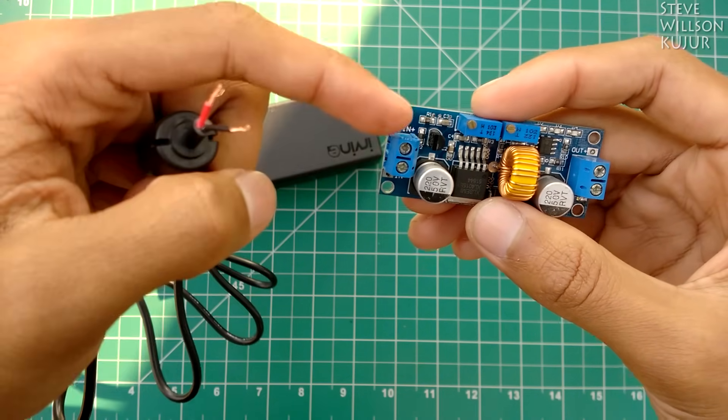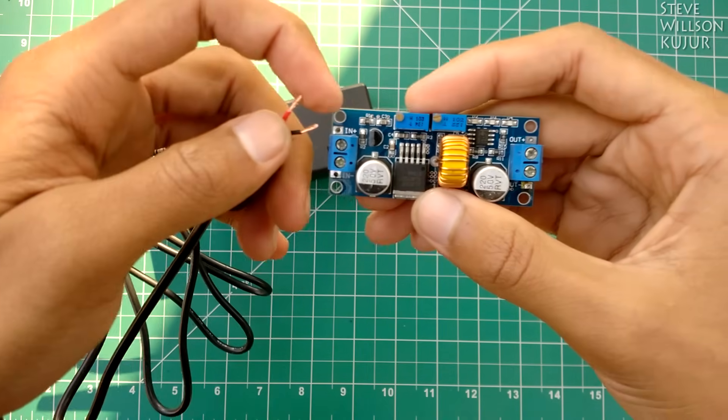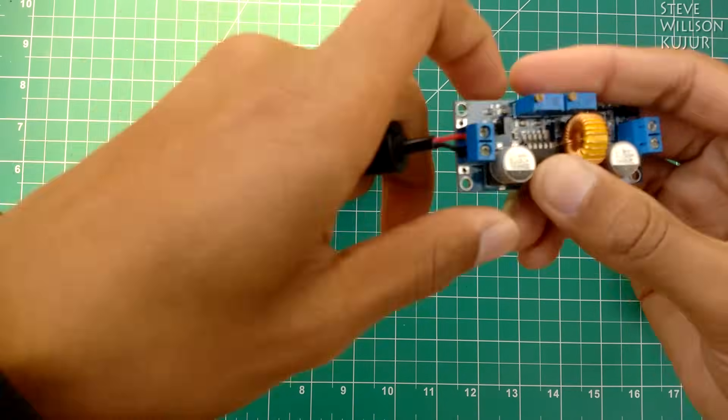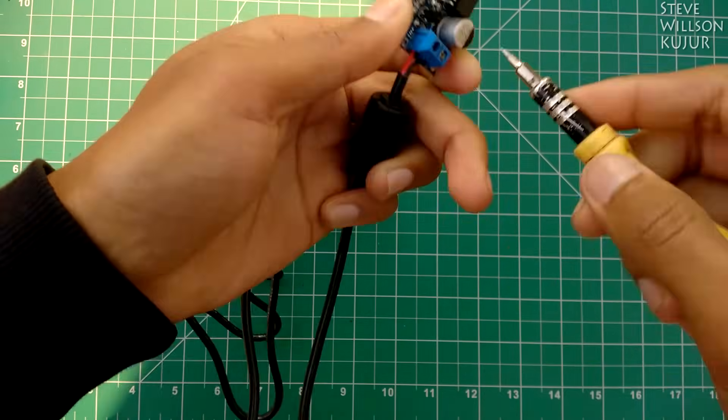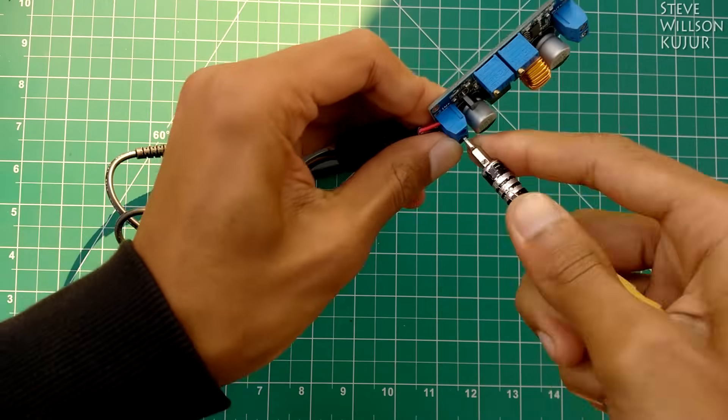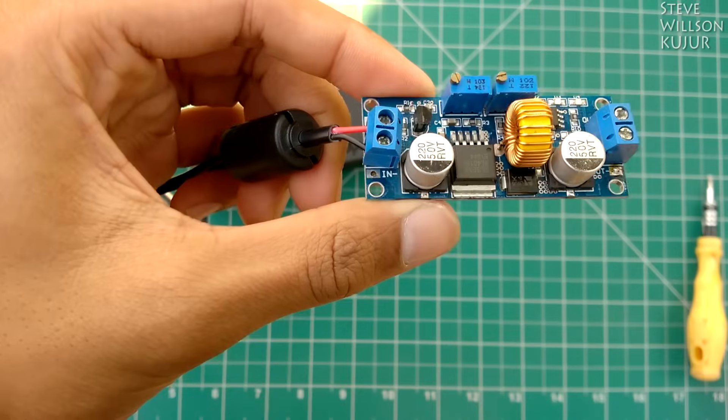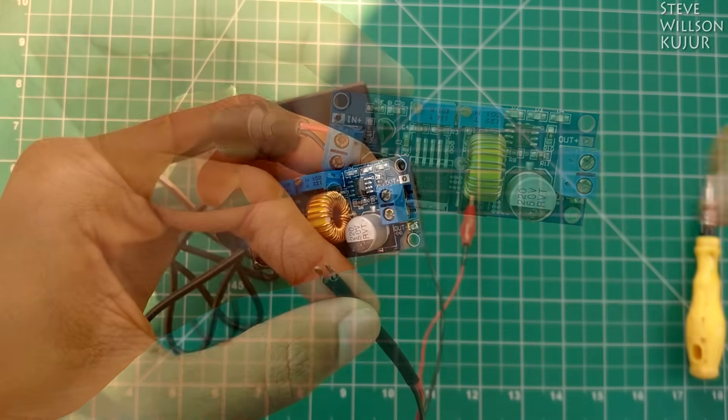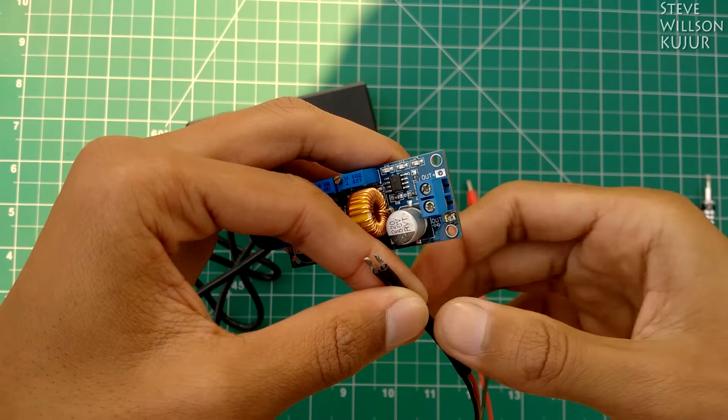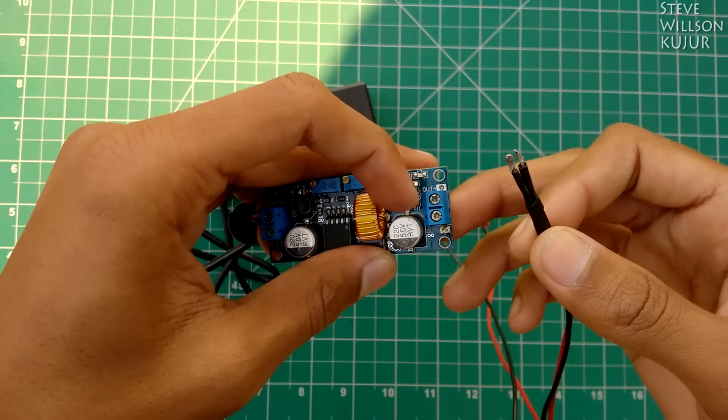Now connect two alligator clips: red to positive and black to negative.